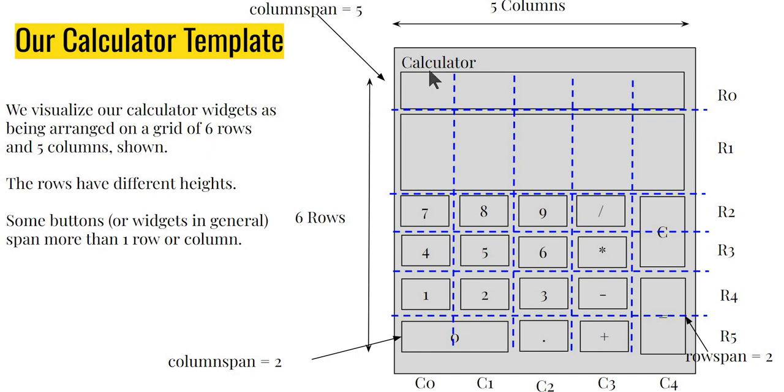For example, the expression label has a column span of five. That's why it spans the whole width of the calculator. Likewise, for the entry label, for these buttons, for example, the C button, the equal to button, the zero button.